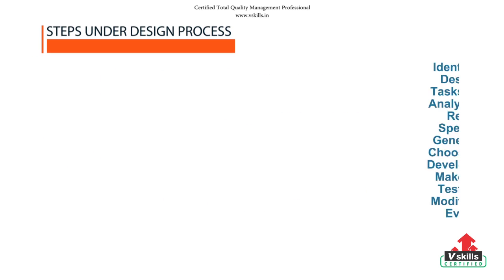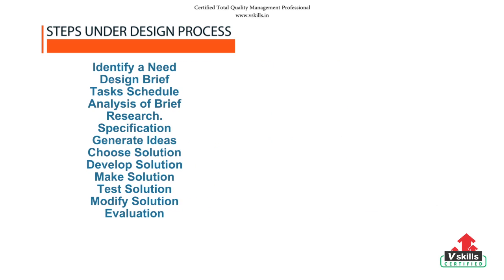The following are the steps used under the design process: identifying a need or purpose in a given situation; producing a short design brief; listing all major areas of work and allocating times and deadlines; looking at the brief to produce a list of research questions; identifying and collating information only relevant to the analysis of the brief; producing a list of design requirements found from research relevant to the brief; and generating a range of different possible solutions satisfying the specification.